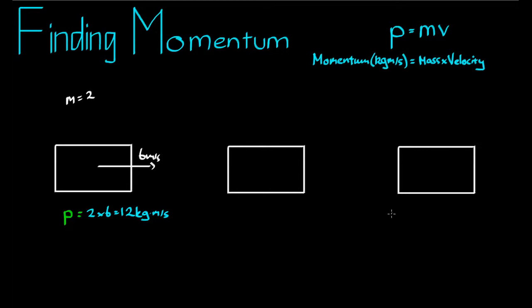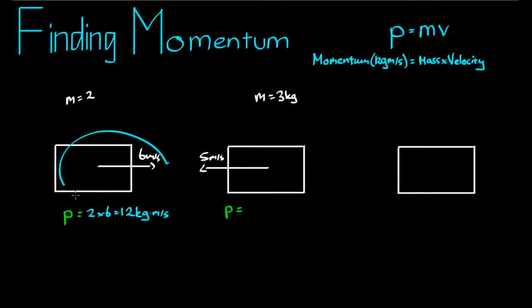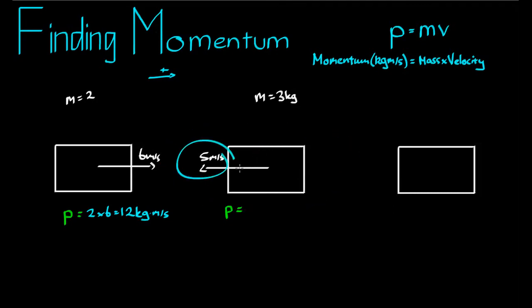The second box has a mass of three kilograms, and it's moving at a speed of five metres per second to the left. Let's figure out the momentum. This brings us to an important point: momentum, like velocity and like acceleration, is a vector. It has direction, and it can be negative. Since the momentum of the first box is positive, we can assume we're working to the right as the positive direction. But this box is moving to the left, so even though it has a speed of five metres per second, the velocity of this box is negative five metres per second.